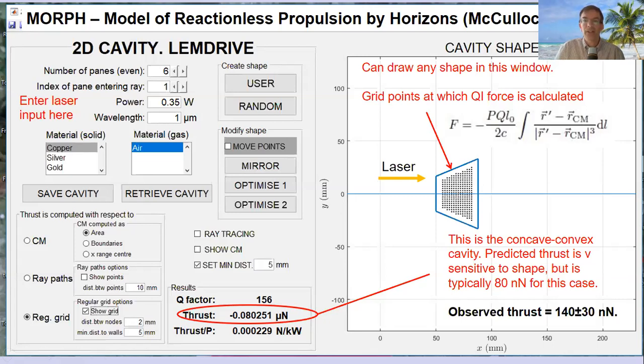The software will predict the thrust that quantized inertia predicts for this cavity, given that the laser light is bouncing around inside, energizing the vacuum. As I predicted, the cavity should move towards its narrow end, and indeed it does. The thrust is minus 0.08 micronewton, which gives you a thrust-to-power ratio of about 0.0002 newtons per kilowatt. This agrees pretty well with the results Martin Tajmar saw, though they're not conclusive yet.